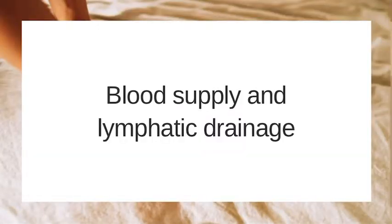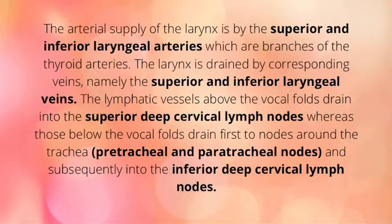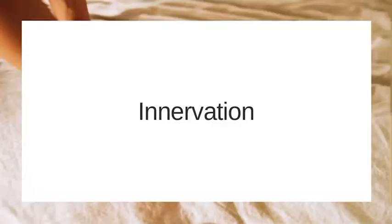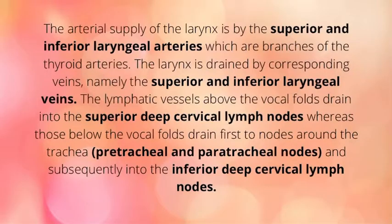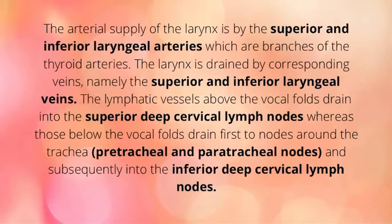Blood supply and lymphatic drainage: the arterial supply of the larynx is by the superior and inferior laryngeal arteries, which are branches of the thyroid arteries. The larynx is drained by corresponding veins — the superior and inferior laryngeal veins. The lymphatic vessels above the vocal folds drain into the superior deep cervical nodes, whereas those below the vocal folds drain first to nodes around the trachea — the pretracheal and paratracheal nodes — and subsequently into the inferior deep cervical lymph nodes.